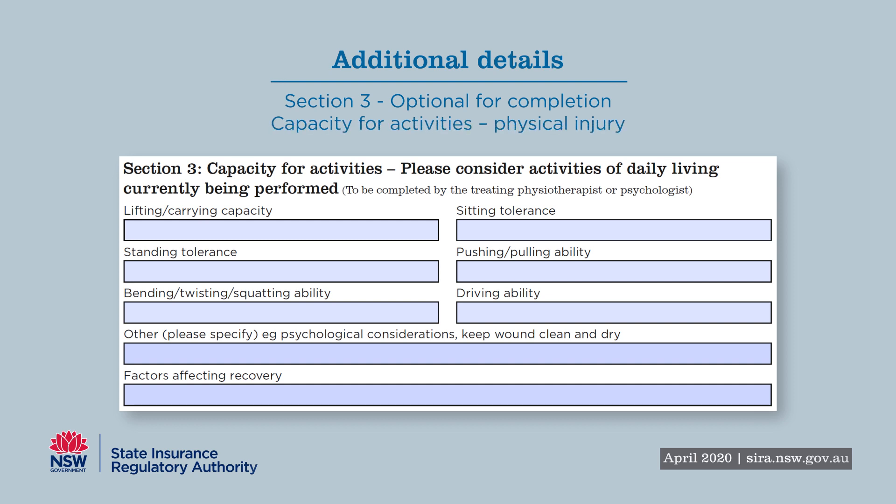The Capacity for Activities section is where the practitioner provides additional information about a person's capacity for work, which may be informed by activities the worker is currently able to undertake at home. It is essential to quantify their capacity using repeatable, reliable measures. In this example, Jack has a work-related lower back injury. He works predominantly on the floor of a warehouse with some administrative work each day and drives 20 minutes to work.